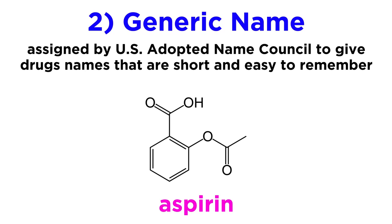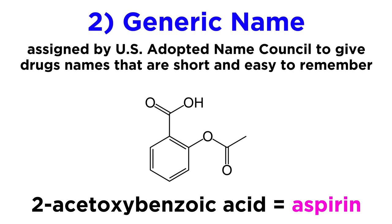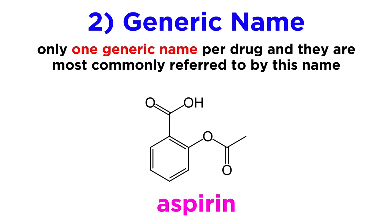Generic names are typically assigned by the US Adopted Name Council, specifically for the purpose of giving drugs with long chemical names — often much longer than this one — another name that is short and easy to remember, even though it does not actually describe the composition of the molecule. There is only one generic name for any drug, so drugs are most commonly referred to by their generic names, since non-chemists, which is most of us, do not have the vocabulary required to pronounce or understand most chemical names. Generic names should be memorized, as it is rather easy to do so, and they are useful.